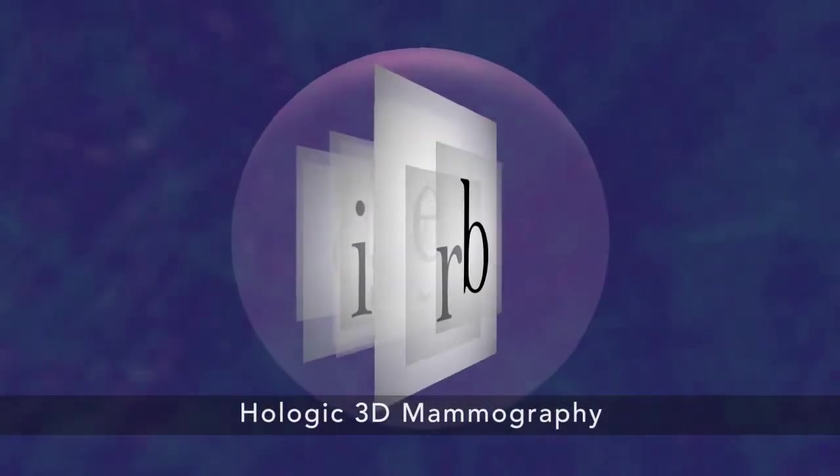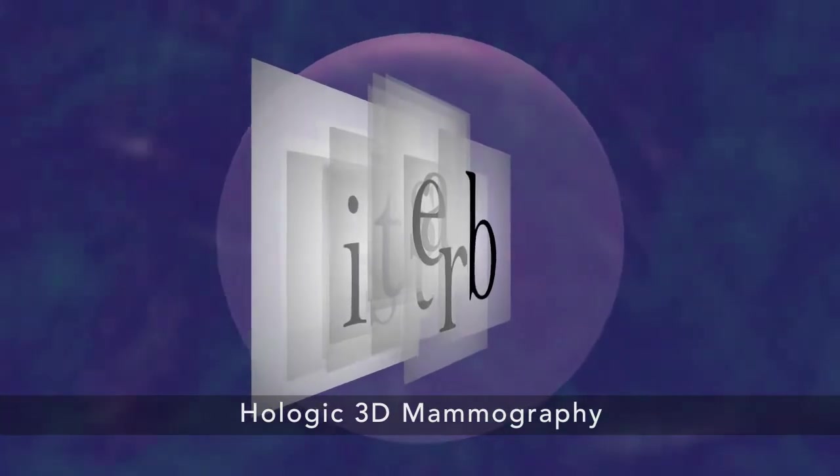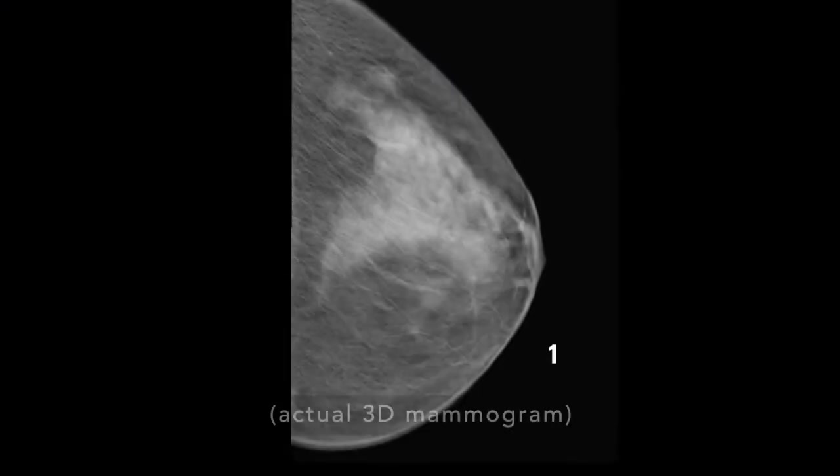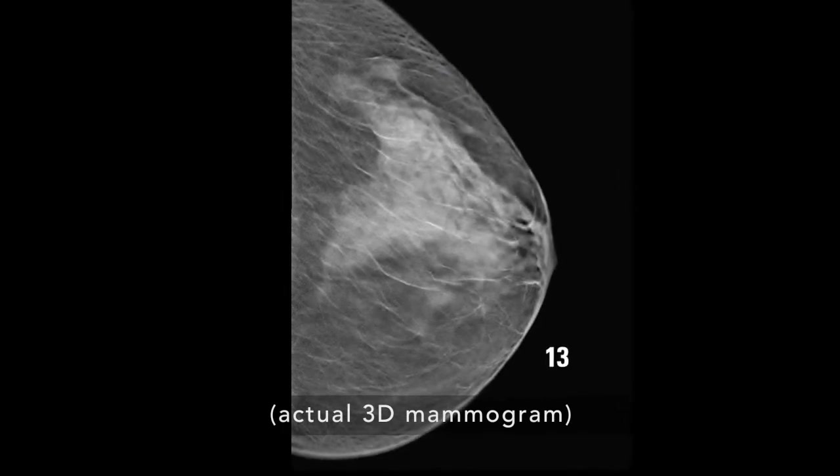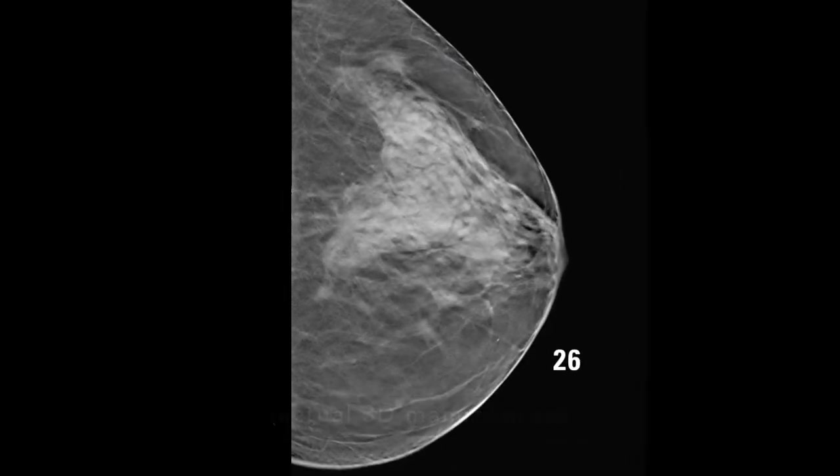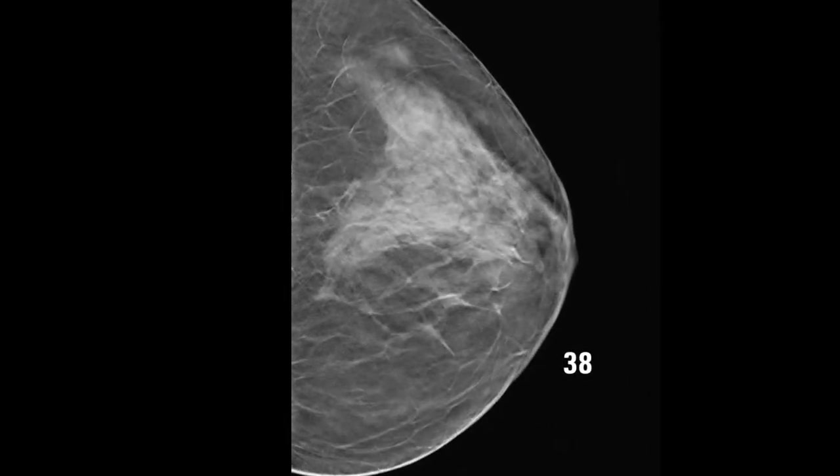3D Mammography is different because it shows your tissue in very thin layers, almost like turning pages in a book. That makes it easier for doctors to see if there's anything to be concerned about. There's less chance for a cancer to hide behind overlapping tissue.